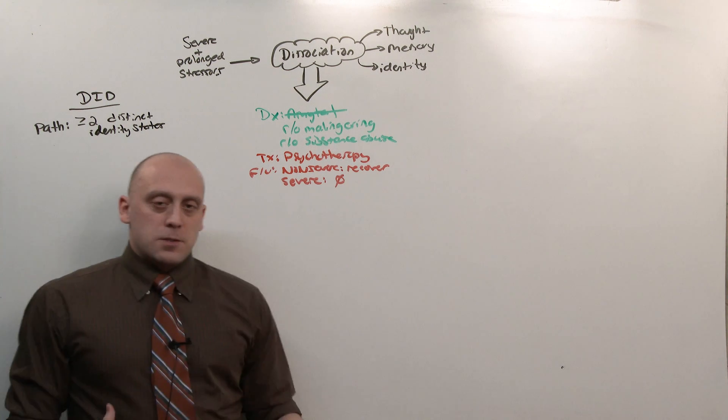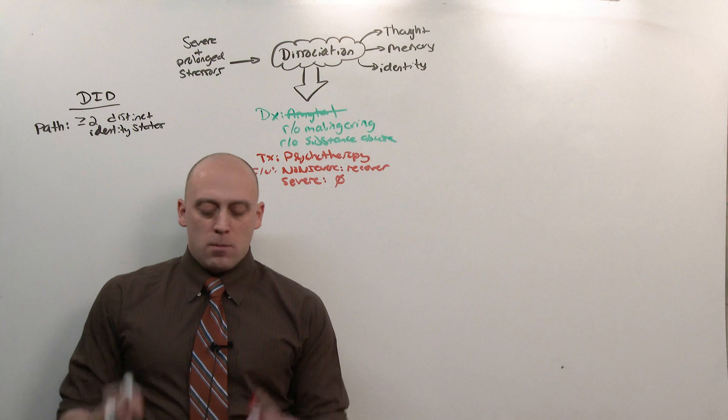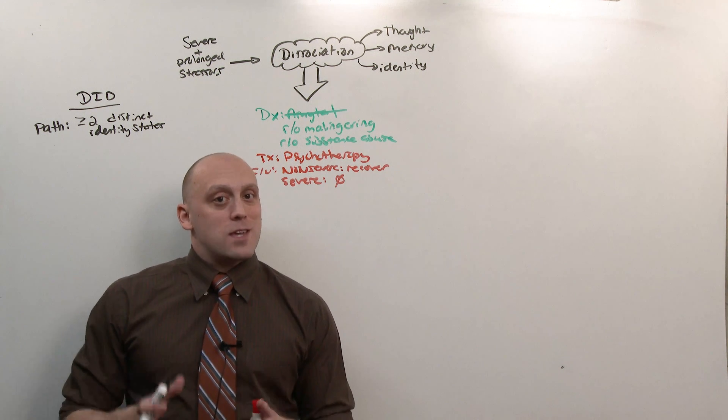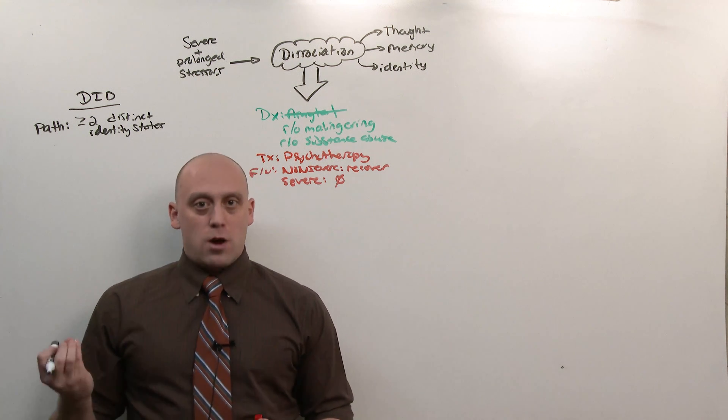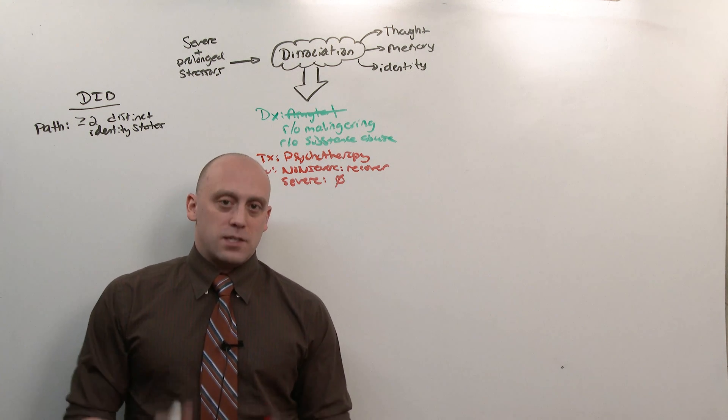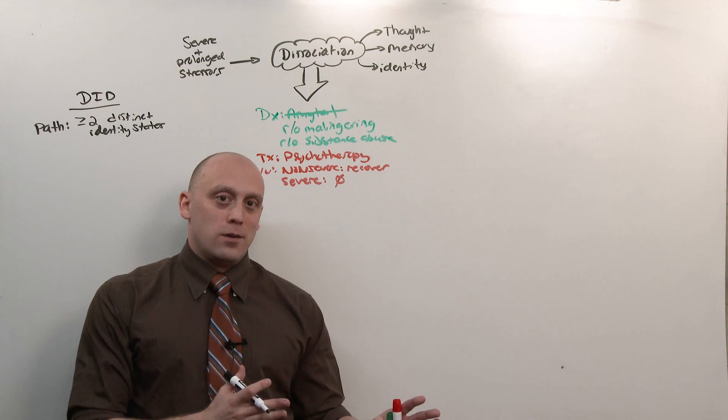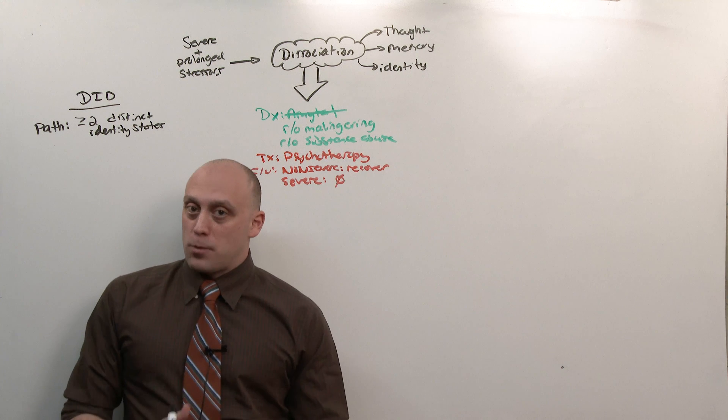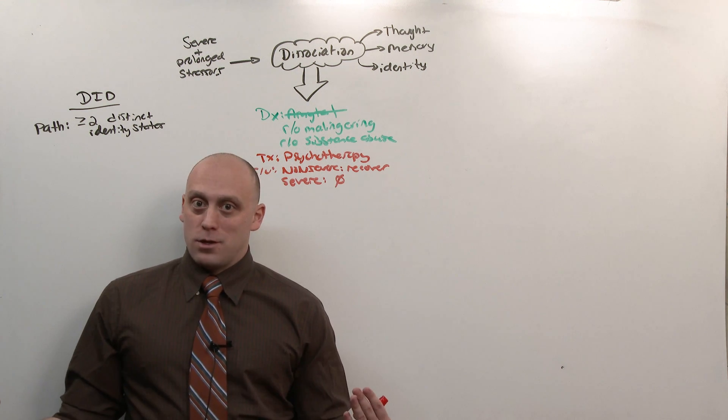And the way you get this is to have at least two distinct identity states. The idea is something like this. You have some really severe prolonged stressor. And the self is experiencing that. And what happens is the psyche creates an additional identity to absorb that trauma so that the primary doesn't experience it. But after the stressor is over, that secondary identity exists. Sometimes the primary personality knows about it. Sometimes identities know about each other. Sometimes they don't.